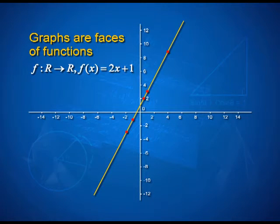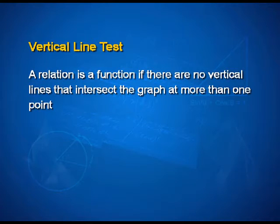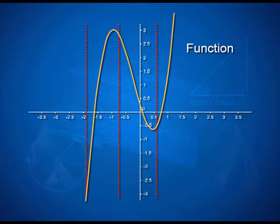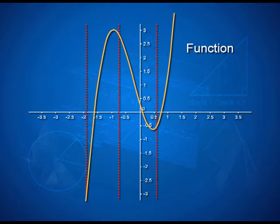Given a graph, how do we decide if it represents a function or not? We use something called the vertical line test. The vertical line test says that a relation is a function if there are no vertical lines that intersect the graph at more than one point. Suppose I have a graph and I take vertical lines at different places — if none of these vertical lines intersect the graph at more than one point, then the vertical line test says this graph represents a function.